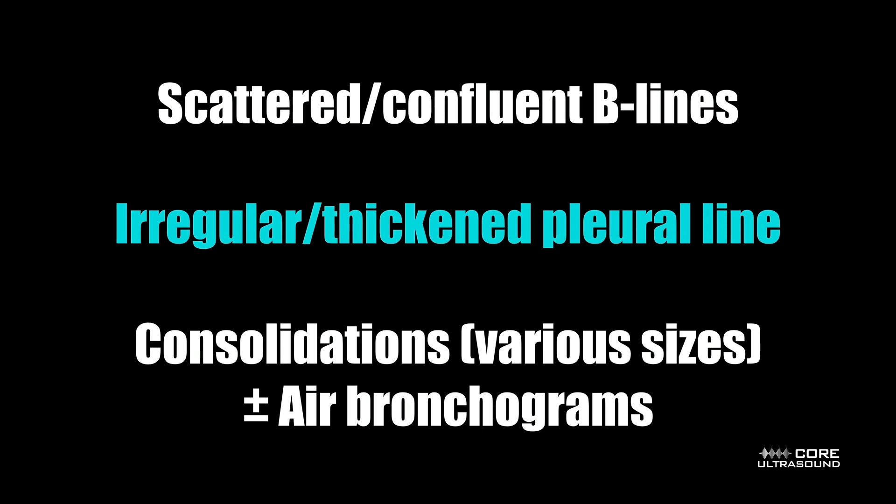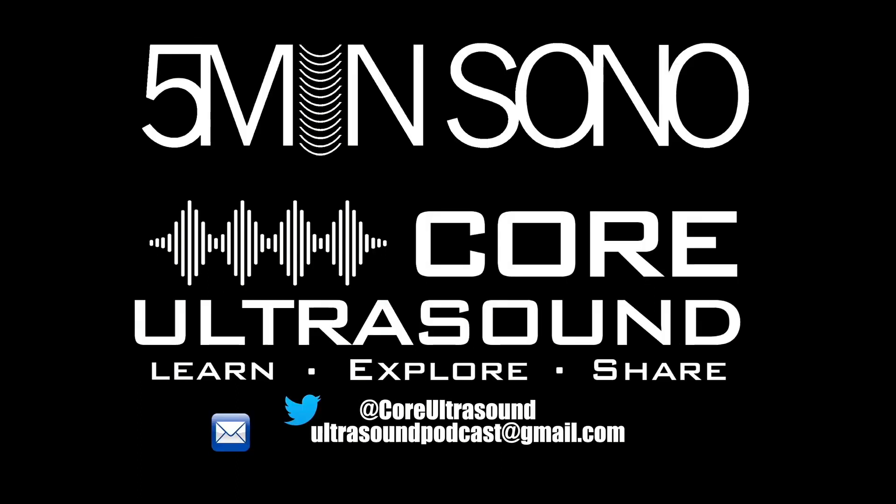To recap, the main findings in a viral pneumonia are going to be scattered or confluent beelines, an irregular or thickened pleural line, and consolidations of various sizes plus or minus air bronchograms. That's it for this five-minute Sono video. If you want more, check out coreultrasound.com. Happy scanning.